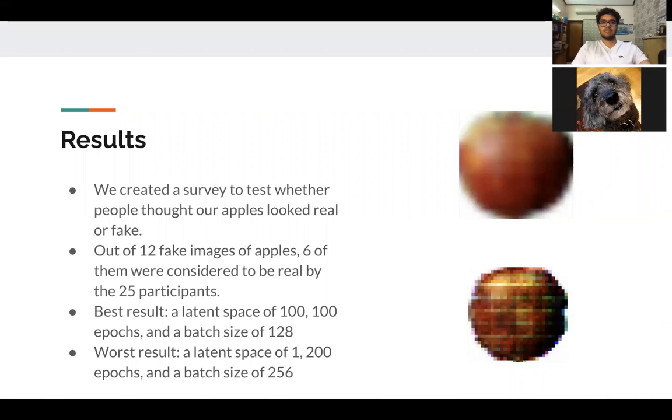People did find the top apple most real, which suggests that the latent space and the batch size were more important than the number of epochs. If you remember back a couple slides ago, we showed you a picture of what we thought were the best results, and that essentially had all the same parameters except it was trained on about 100 more epochs. Our second apple on the slide was considered to be the worst overall, even more so than its closest counterpart which was an apple with a latent space of one and a batch size of 128. This suggests that perhaps the batch size was the most important factor here.